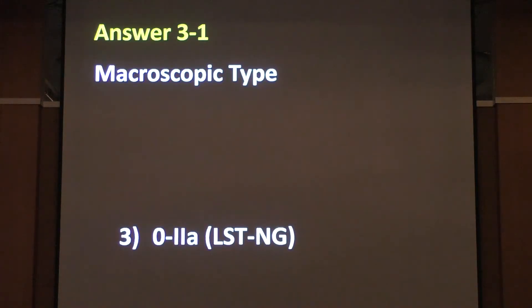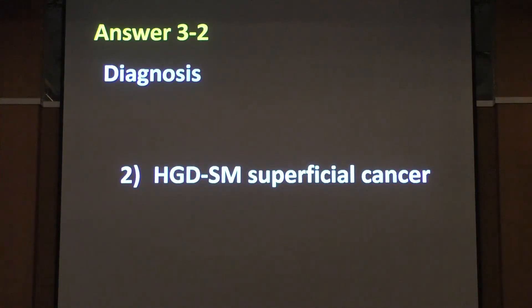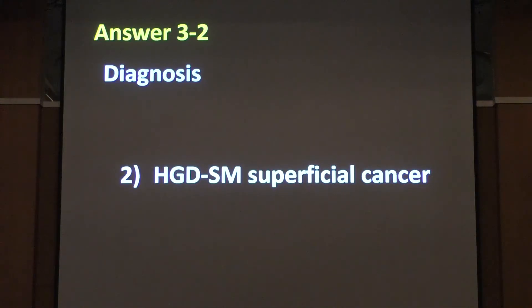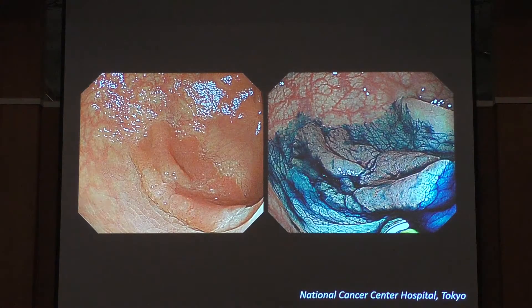Let me check the answers. The correct macroscopic type is 0-2A LST non-granular type — a typical case. The diagnosis correct answer is the second option. If you can understand that this lesion should be an intramucosal neoplastic lesion, that is sufficient, and the correct treatment option will be ESD. This is a very typical endoscopic finding of LST non-granular type — no nodules, and a flat elevated lesion.